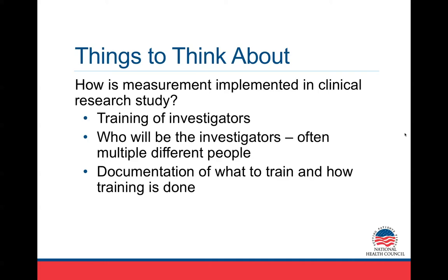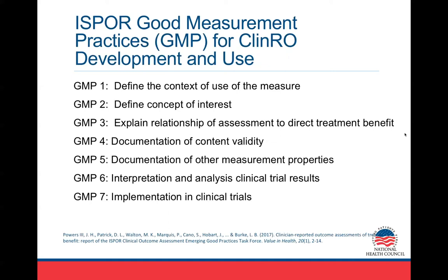That was a plain-language summary of the seven things we put into the ISPOR good measurement properties for development and use of clinician-reported outcomes. First, defining the types of patients you're going to use it in. Two, defining what you're actually going to measure. Three, explaining how those indirect measurements assess direct treatment benefit for patients. Four, documenting that you're measuring the right thing in terms of content validity. Five, looking at other measurement properties — do the same or different clinicians get similar measurements? Six, how you're going to interpret and analyze those results. And seven, how you're going to implement them.